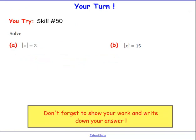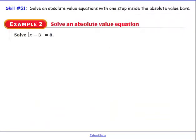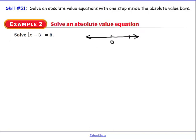Here are two examples for you to try on your own. Now that you can solve an absolute value equation with no steps inside the bars, we're going to solve one with one step inside. For this example, I want to know for what value of x would this expression be 8 units away from 0. Being 8 units away from 0 could either be 8 units to the right or 8 units to the left — ending at positive 8 or negative 8.